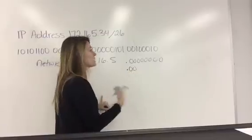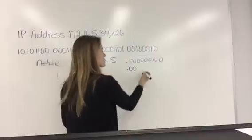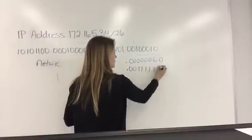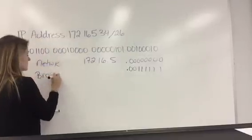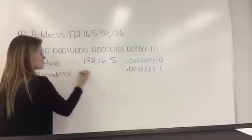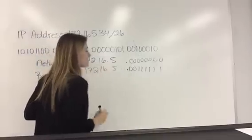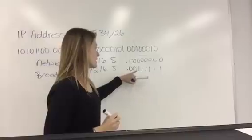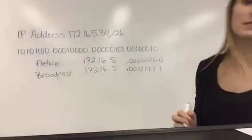So we start with the two zeros in the last octet, but then we make the remaining six bits 1. So our broadcast address is going to be 172.16.5 and then 00 with a bunch of ones is 63.